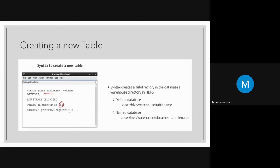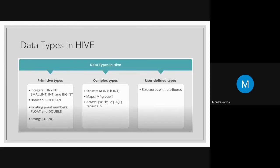You can also specify the database name in the table creation syntax to create a sub-directory. Data types in Hive include primitive types and complex types. Primitive types are: TINYINT, SMALLINT, INT, BIGINT, BOOLEAN, FLOAT, DOUBLE, and STRING. Complex types include STRUCT, MAP, and ARRAY. User-defined types and user-defined functions (UDFs) are also supported, which means you can write custom functions in Java and use them within the Hive framework.